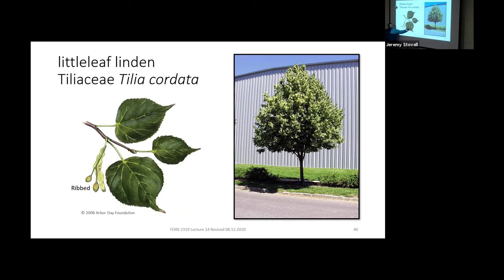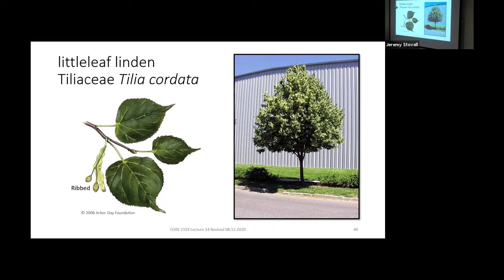The leaves of Little-leaf Linden overlap in size with our native basswood, so don't use leaf size to tell them apart. Instead find the fruit and roll it in your fingers. Little-leaf Linden has a ribbed nutlet — four ribs — so it goes clunk-clunk-clunk rolling in your fingers. Our native basswood nutlets are unribbed, so you won't feel that.